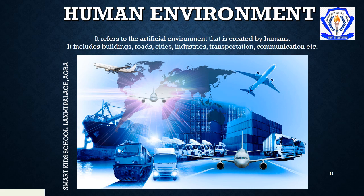अब हम देखेंगे कि मनुष्य इस नाजुक ecosystem को कैसे नष्ट करता है — अपना खुद का environment बना कर, जिसे हम human environment कहते हैं। हमारे आसपास जो कुछ भी man-made है वो human environment है, जैसे buildings, roads, cities, industries, tables, chairs, parks and means of transportation and communication.